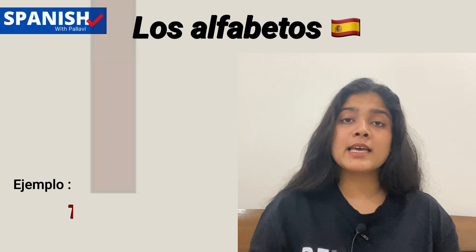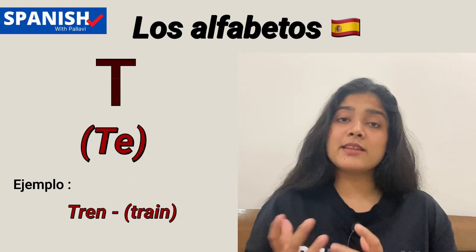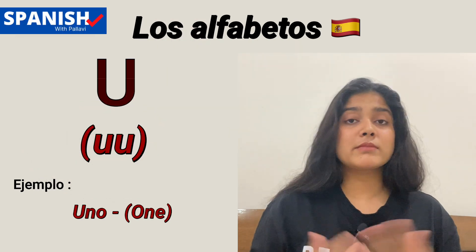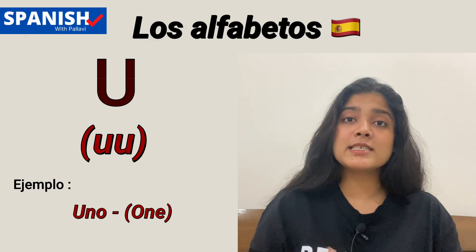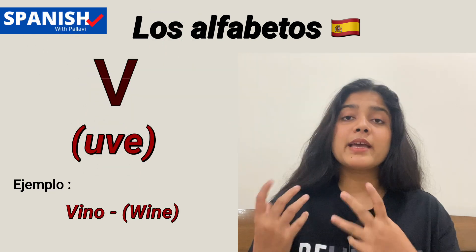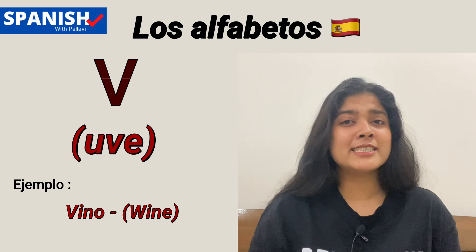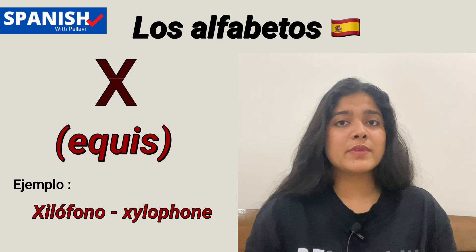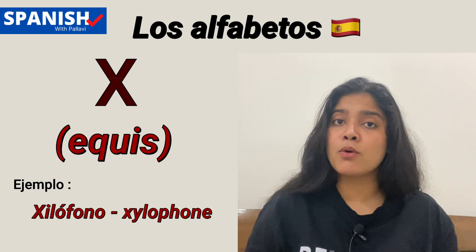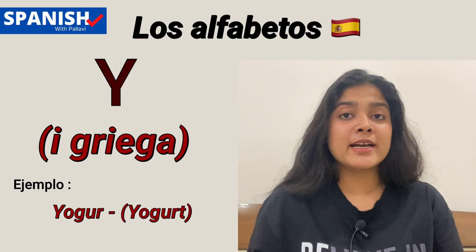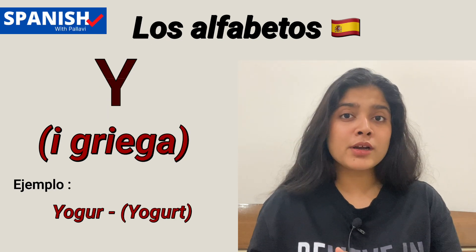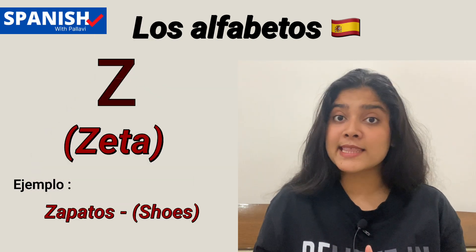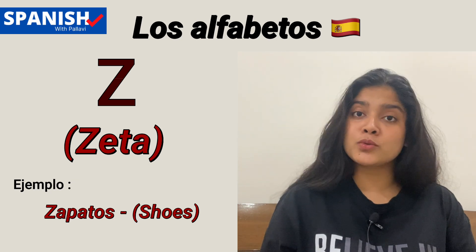This is T — T, and the example is tren (train). This is U — U. This is V — uve, uve, example: vino (wine). This is W — uve doble. This is X — equis, equis, like xilófono. This is Y — i griega, i griega, example: yogur (yogurt). Last but not least, this is Z — zeta, zeta, example: zapato (shoe).